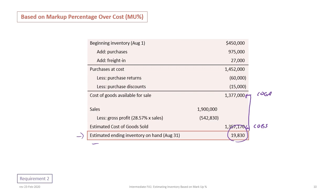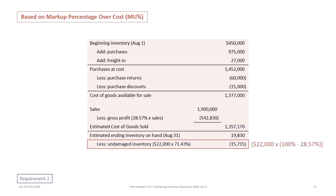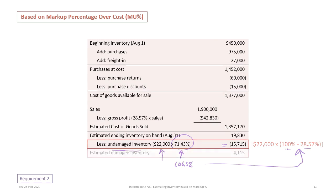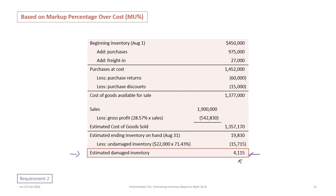The next step is to deduct the undamaged inventory. We determine the undamaged inventory using its sales value as provided in the problem — $22,000. Our cost of goods sold percentage is the leftover after taking the gross profit percentage off sales: 71.43%, calculated as 100% minus the GP percentage of 28.57%. Taking $22,000 times 71.43% gives us $15,715 of undamaged or salvageable inventory. That means the estimated damaged inventory is only $4,115, and that is how much would be claimed for insurance purposes.